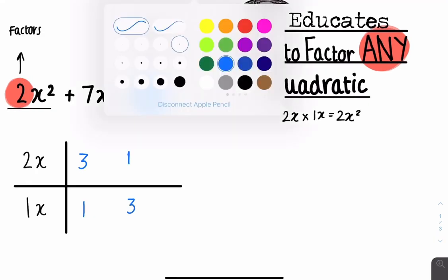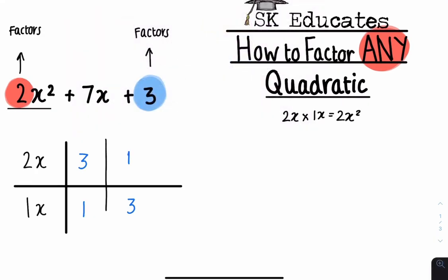Now that your grid is complete, all you have to do is cross multiply. With the first column, you do 2x multiplied by 1, which is 2x, and 1x multiplied by 3, which is 3x. Now using these two terms, can we add or subtract them to make plus 7x? No, we can't. Therefore, this column does not work.